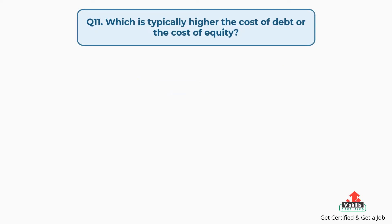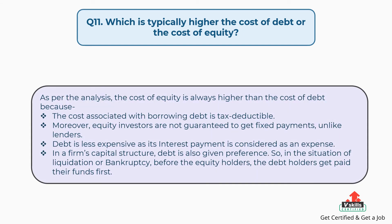Question number eleven: which is typically higher — the cost of debt or the cost of equity? The answer is, the cost of equity is always higher than the cost of debt because the cost associated with borrowing debt is tax deductible. Moreover, equity investors are not guaranteed to get fixed payments, unlike lenders. Debt is less expensive as its interest payment is considered an expense. In a firm's capital structure, debt is also given preference, so in the situation of liquidation or bankruptcy, debt holders get paid their funds before equity holders.